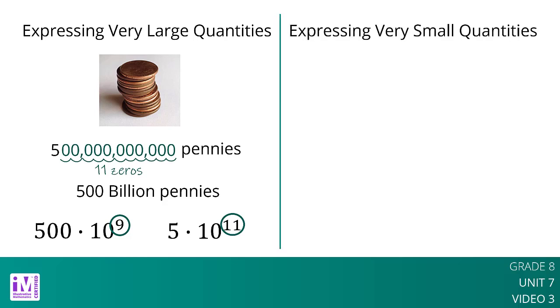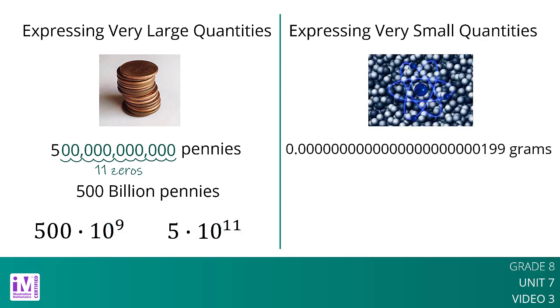The same is true for small quantities. For example, a single atom of carbon weighs about 199 ten-septillionth grams. We can write this using powers of 10 as 199 times 10 to the negative 25th power, or equivalently as 1.99 times 10 to the negative 23rd power. Not only do powers of 10 make it easier to write this number,